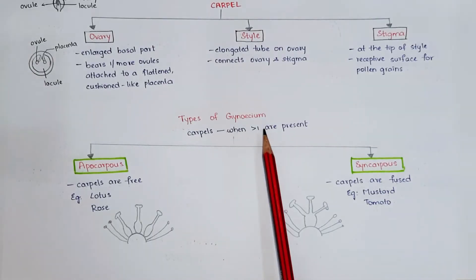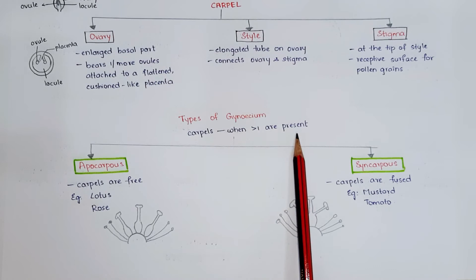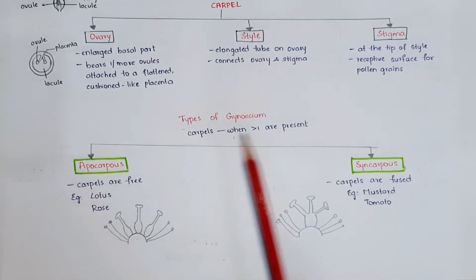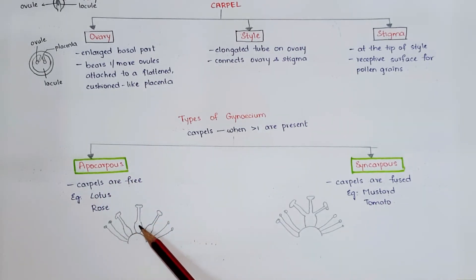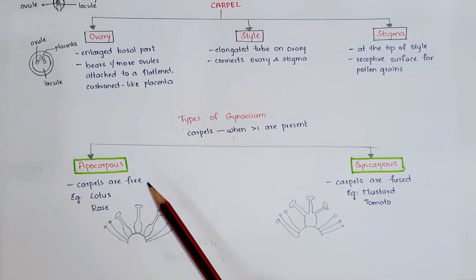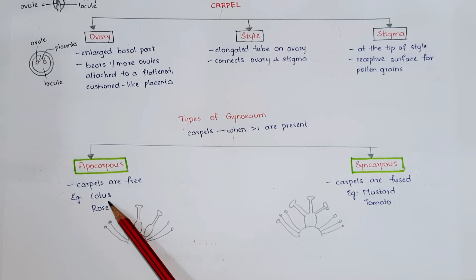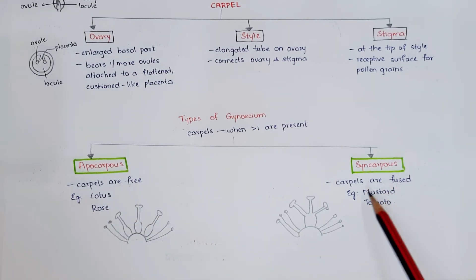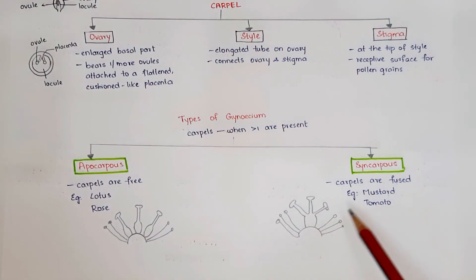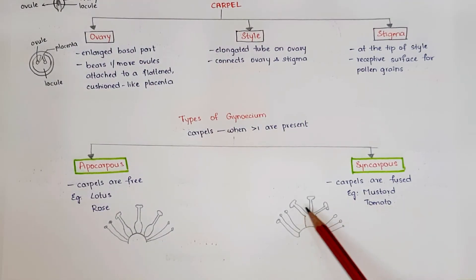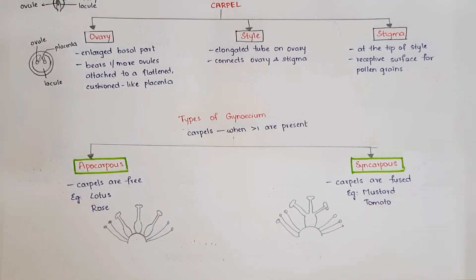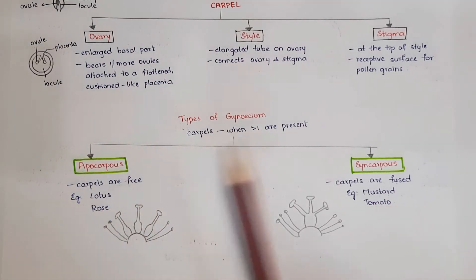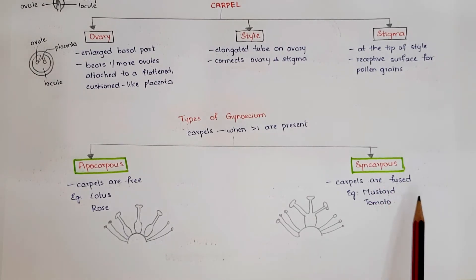Coming to types of gynoecium: when more than one carpel is present, two types are seen — apocarpous and syncarpous. In apocarpous, the carpels are free; examples are lotus and rose. In syncarpous, the carpels are fused — for example, three carpels fused to form a single one; examples are mustard and tomato.